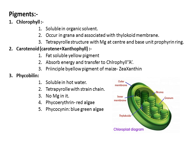Second, chlorophyll occurs in grana and is associated with the thylakoid membrane. This is shown in the structure of the chloroplast — the thylakoid, stroma, and granum. So its location can be asked. Third point is tetrapyrrole structure with magnesium as the center and base unit porphyrin ring.